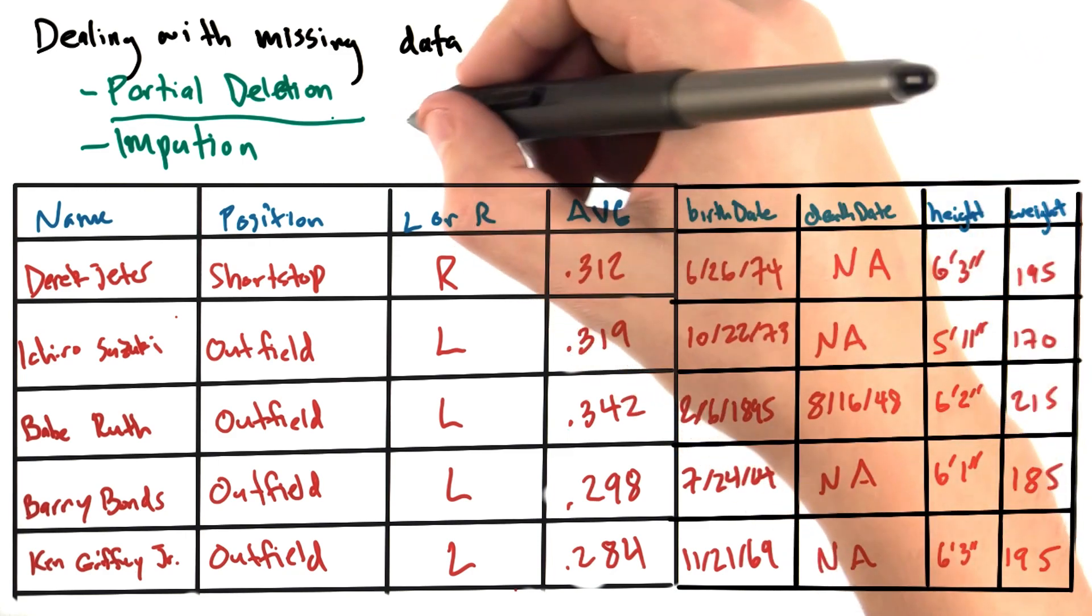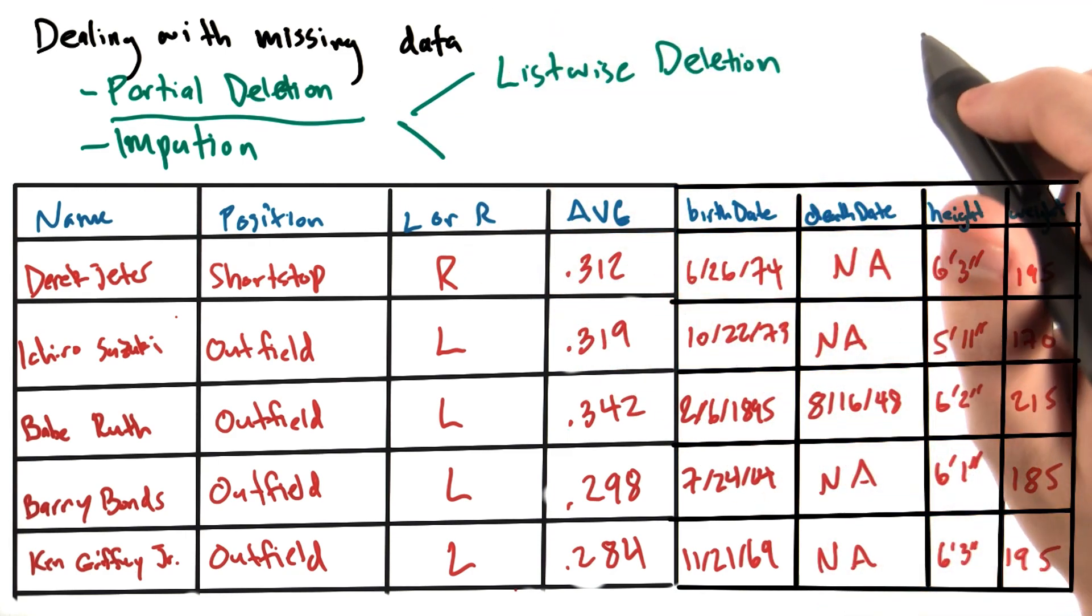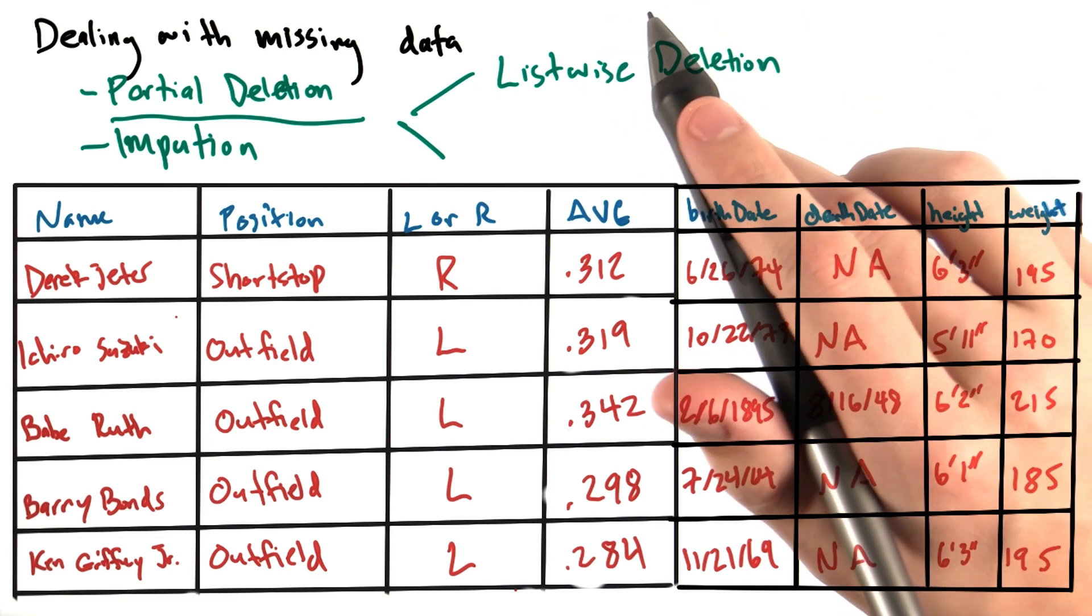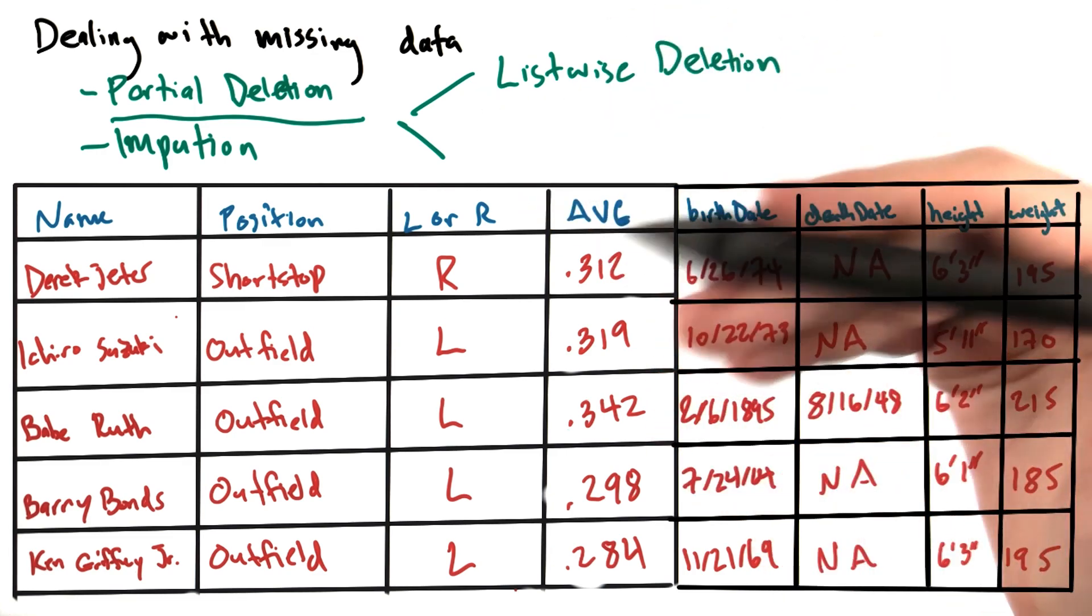One method we could use is called listwise deletion. When we perform listwise deletion, we'd exclude a particular data point from all analyses, even if some useful values were present.